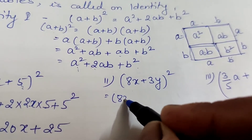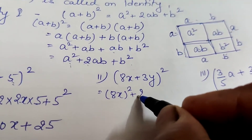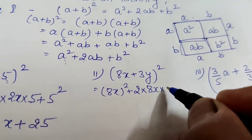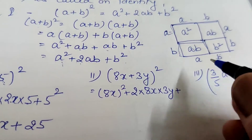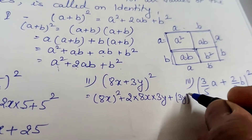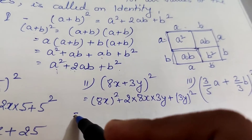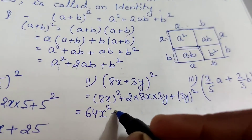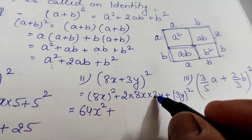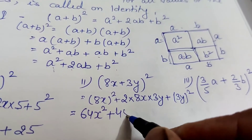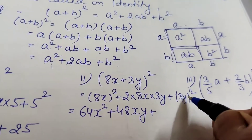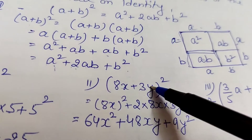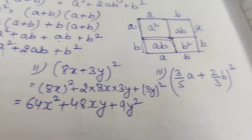The second question is (8x + 3y)². Using the same process: square of the first number, plus two times the product of the two numbers (8x × 3y), plus square of the second number. 8² = 64, so we get 64x². Then 8 × 3 = 24, and 24 × 2 = 48xy. And (3y)² = 9y². So (8x + 3y)² = 64x² + 48xy + 9y².